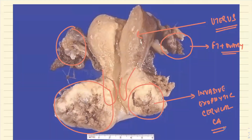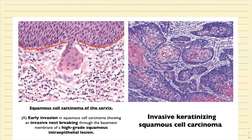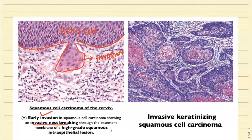Why am I telling you this? Can you appreciate over here — this is the basement membrane. Can you see a part of the tumor has come out? So we will say this is the invasion that is occurring. This was basically an HSIL, a carcinoma in situ, and we can appreciate the invasion of the cervical stroma. Everyone can see there is an early invasion showing an invasive nest breaking through the basement membrane of high-grade squamous cell intraepithelial lesion.